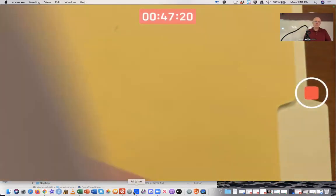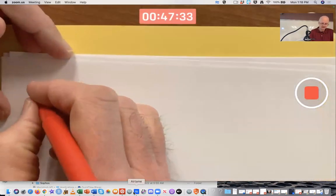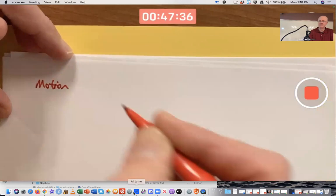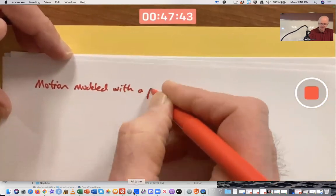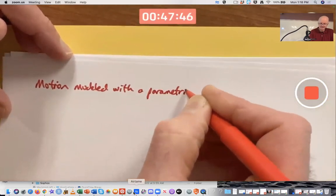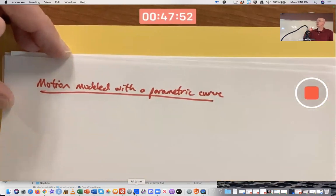This is our last thing to do today. We want to apply now this integral to a situation, a fairly simple situation, involving motion along a parametric curve. Probably better to say motion modeled with a parametric curve. A parametric curve is more than just a curve. It also involves the curve being traced out in a certain way, with a certain speed that's not necessarily even constant but can vary.